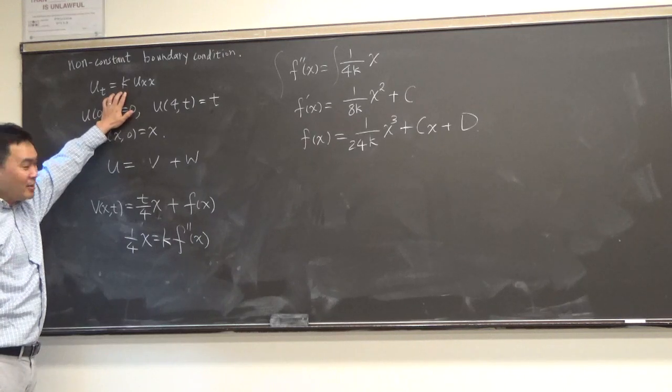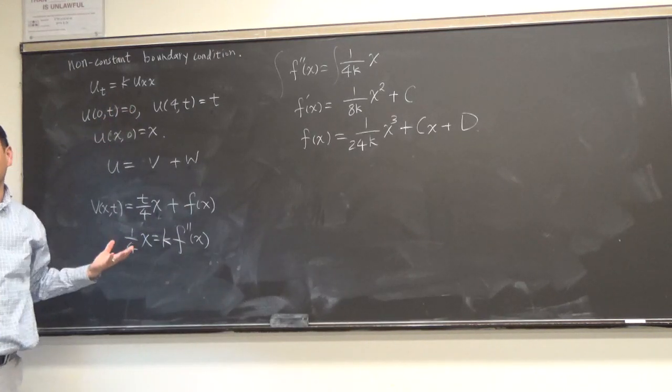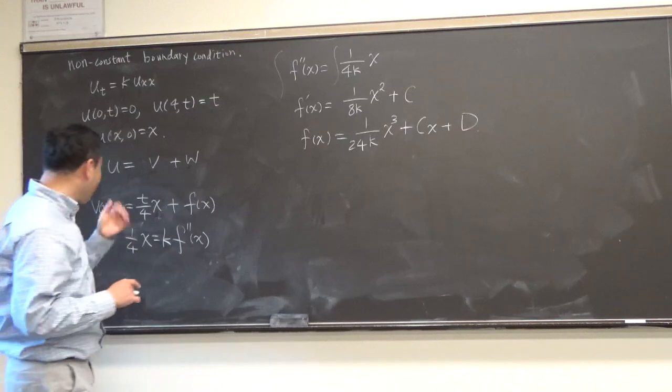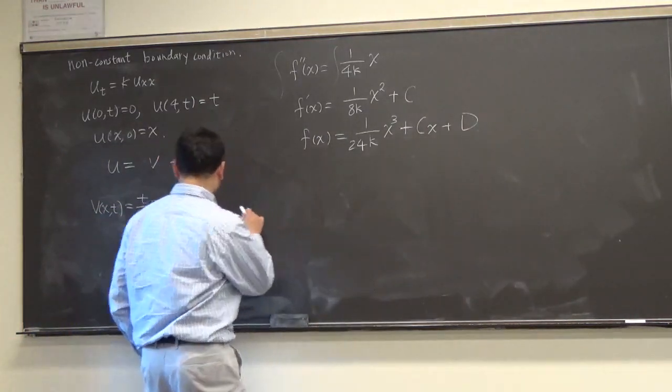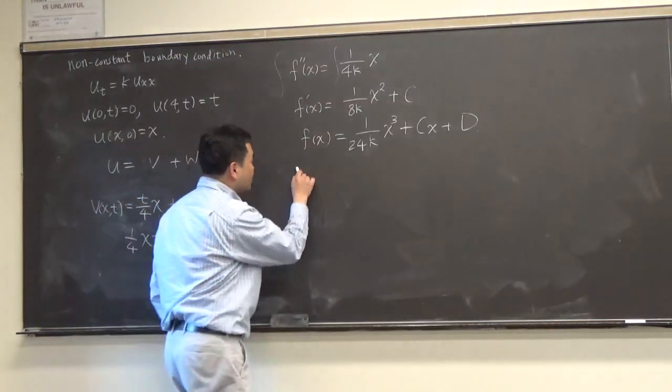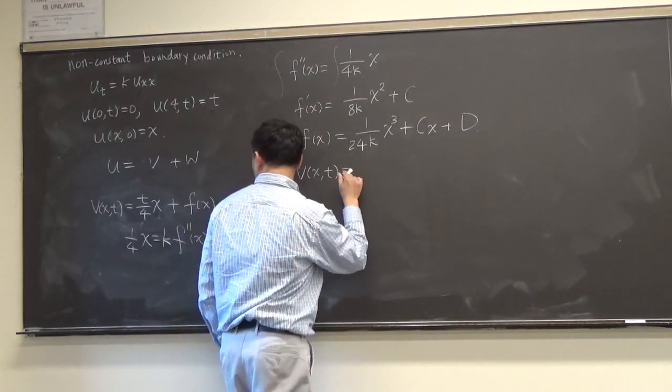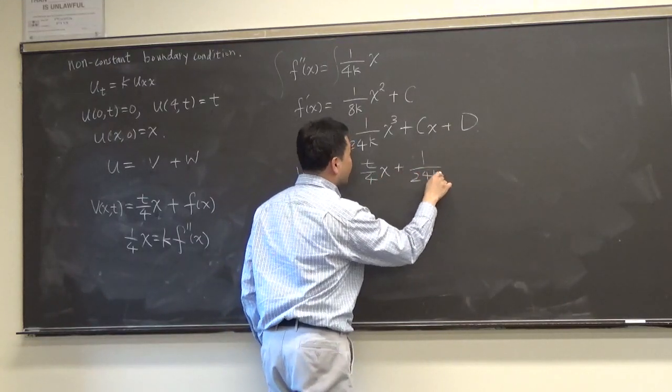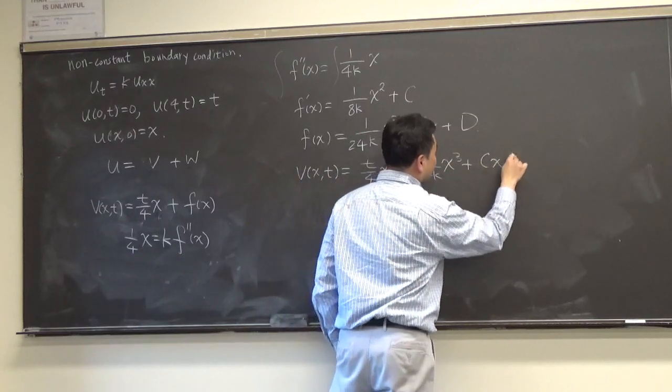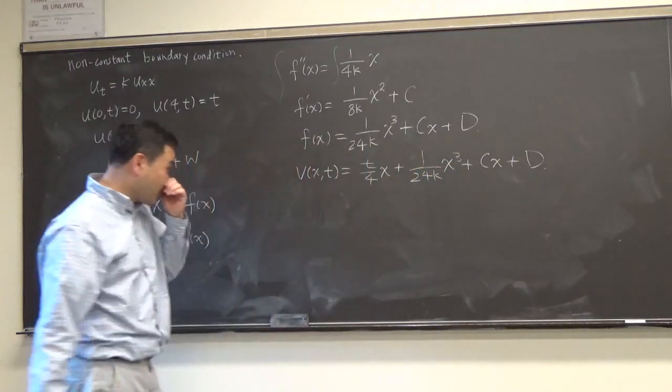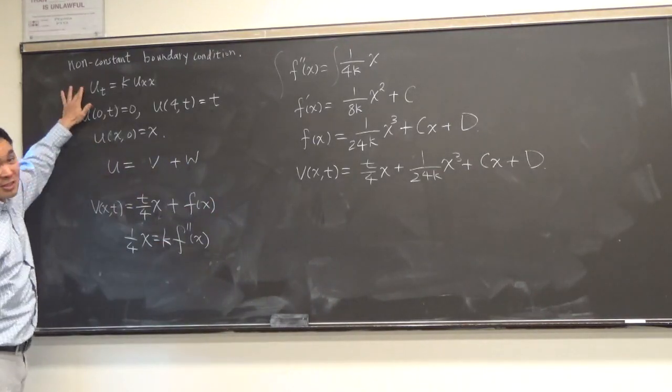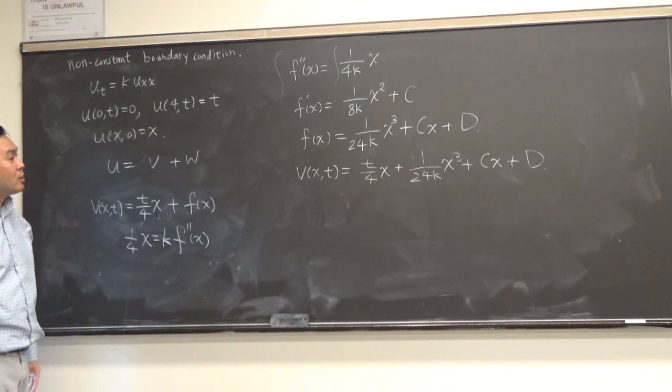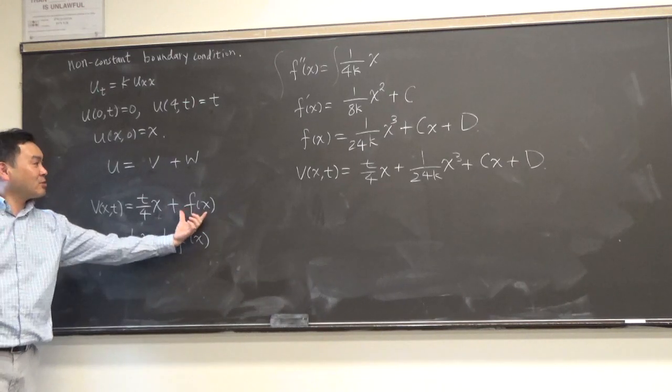Okay. So that has to be f of x if we want this to be satisfied. But then, see, if you make one thing work, then the other one doesn't work. That's why I call this guessing. You just keep trying until it satisfies everything you want. So here's what we have. Now, because we figured out what f of x is, we have v of x,t equals to t over 4x plus one over 24k x cubed plus cx plus d. And this clearly satisfies the heat equation because we made it so, right? We started from the heat equation, so we made it so.